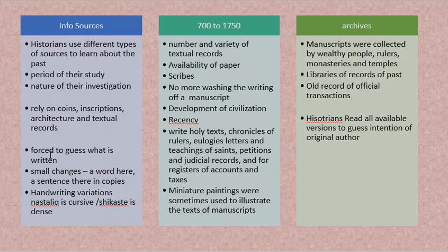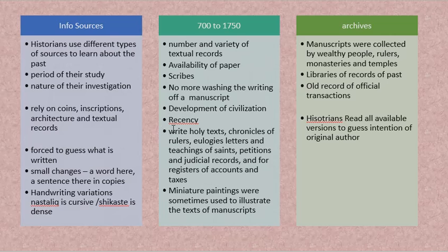An archive is a place where old records are stored — on paper, manuscript, or other materials. Manuscripts were collected by wealthy people, rulers, monasteries, and temples. Those collections became archives, later forming libraries of past records where historians read all available versions to understand the original author's intention. Though it is a more recent period, different scribes wrote different things, records were kept in different copies in different places, and small changes in words or handwriting styles could alter the meaning.